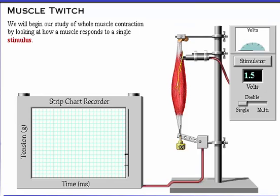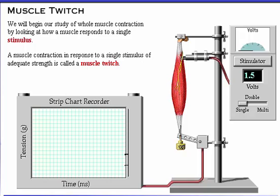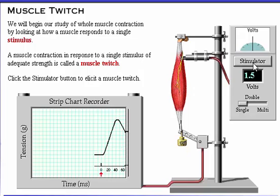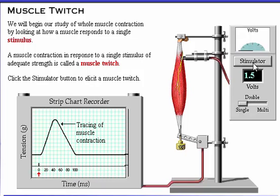We will begin our study of whole muscle contraction by looking at how a muscle responds to a single stimulus. A muscle contraction in response to a single stimulus of adequate strength is called a muscle twitch. Click the stimulator button to elicit a muscle twitch. The graph shows a tracing of the muscle contraction. The short vertical line marks the time when the stimulus was applied to the muscle. If you would like to see this animation again, click the stimulator button.